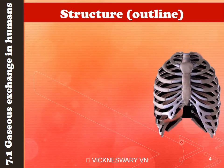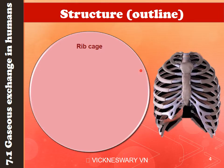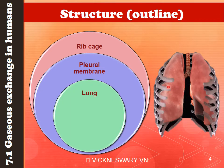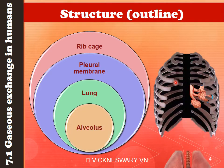You are very familiar with this structure — this is the ribcage. The outermost structure that protects the respiratory system inside is the ribcage. If we were to remove the ribcage, you would find the lungs. Between the ribcage and the lung there is a space called the pleural membrane. Going deeper into the lung, you will be able to see the alveolus.